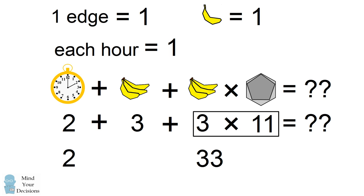We have 2 plus 3 plus 33. So what's our final answer? 2 plus 3 plus 33 is equal to 38. And that's the answer to this puzzle. Did you figure it out?